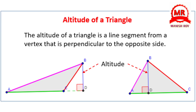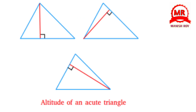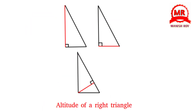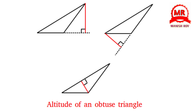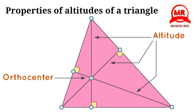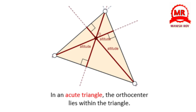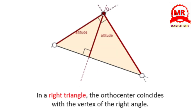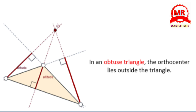Altitude of a triangle. The altitude of a triangle is a line segment from a vertex that is perpendicular to the opposite side. A triangle has three altitudes, and the three altitudes meet at a point called the orthocenter of the triangle. The altitude makes the shortest distance from the vertex to its opposite side. In an acute triangle, the orthocenter lies within the triangle. In a right triangle, the orthocenter coincides with the vertex of the right angle. In an obtuse triangle, the orthocenter lies outside the triangle.